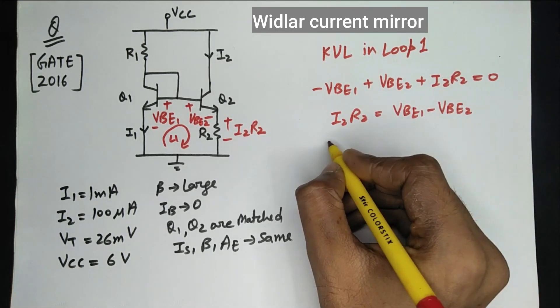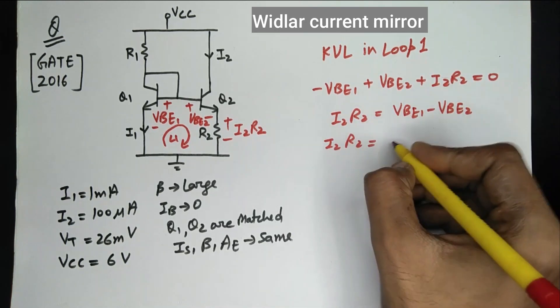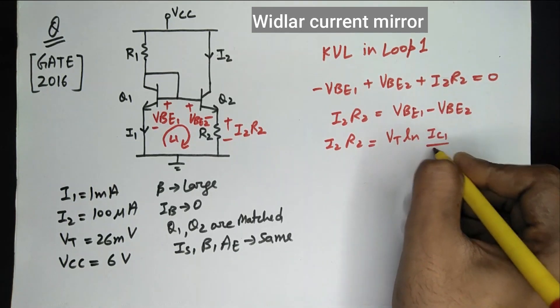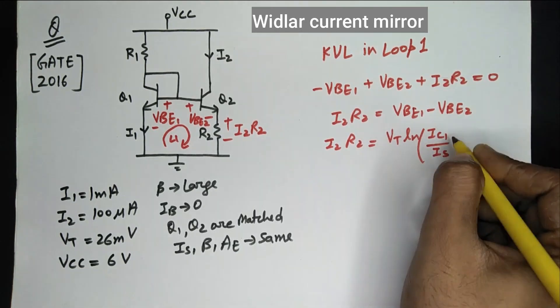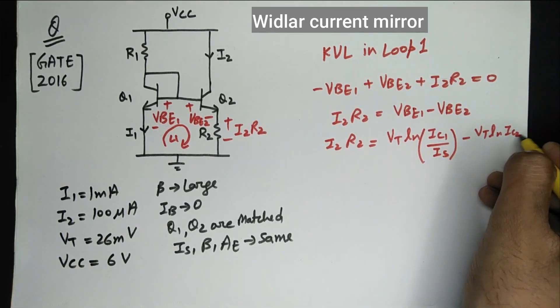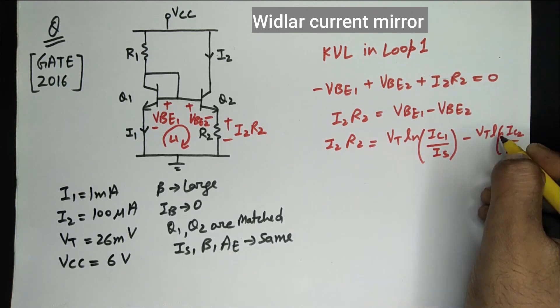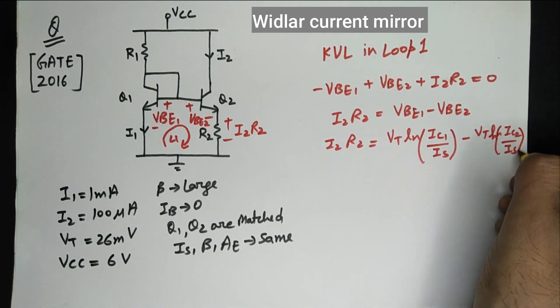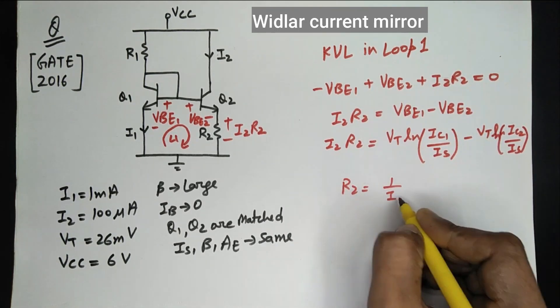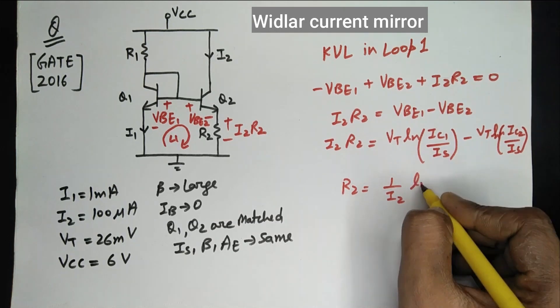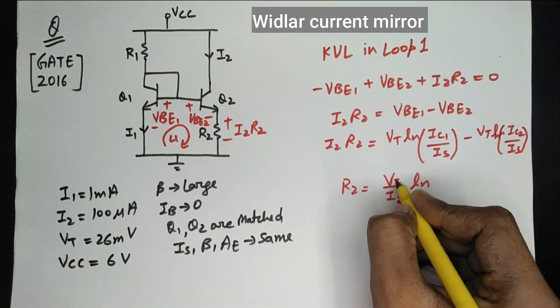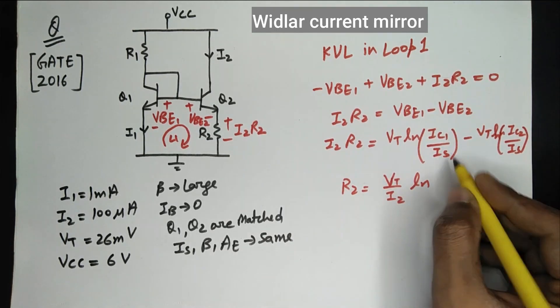Now I2*R2 will be equals to Vt ln IC1 upon IS. R2 will be equals to 1 upon I2 ln. VBE2 will be common to both and I took it outside.